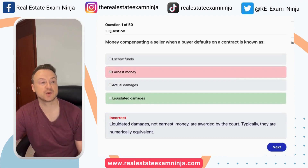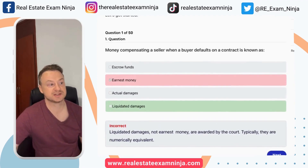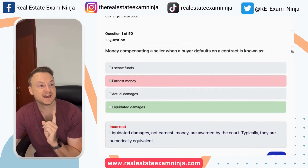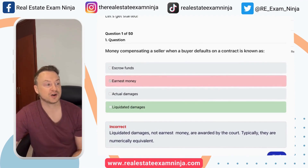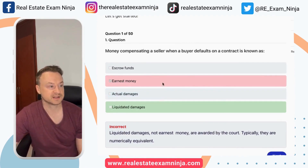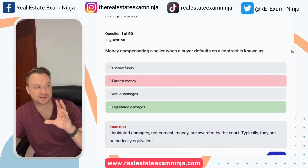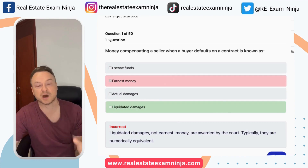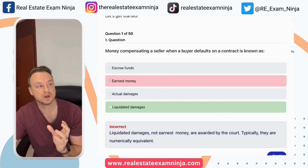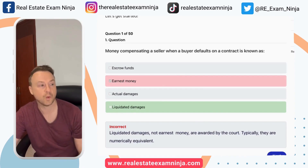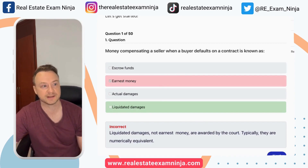The answer is liquidated damages. Liquidated damages, not earnest money, are awarded by the court. Typically they are numerically equivalent. If you check it out on realestatexamninja.com, not only do we tell you when you get it wrong, but we have an explanation why so you don't get it wrong again. Just learn it one time.